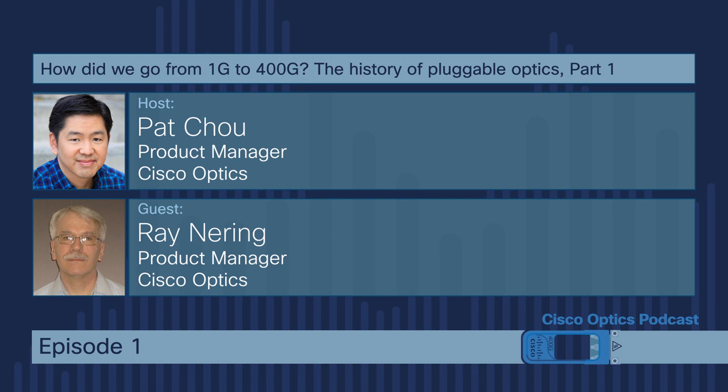At that time, when GBICs and SFPs were new, was the pay-as-you-grow model a big deal, or was it just about flexibility of choosing? Well, pay as you grow was also a big part of it. The more expensive optics for longer reach applications — you may not need that in every application, and you may not necessarily fill all the ports in a line card. As you put that product into your network and add other functions, you can plug in more devices as needed. So you're not buying something you're not going to use. When those dedicated platforms had all the optics preloaded, you were paying for those optics whether you were going to use them or not. The idea here is: you pay for the optic when you need it.